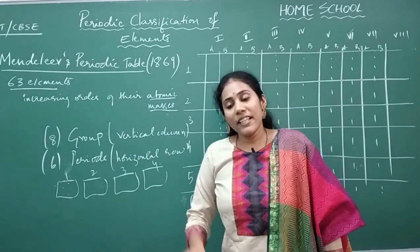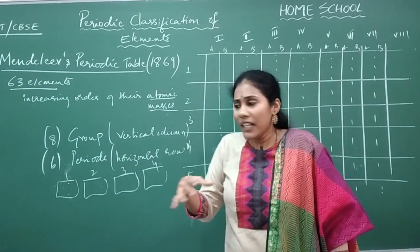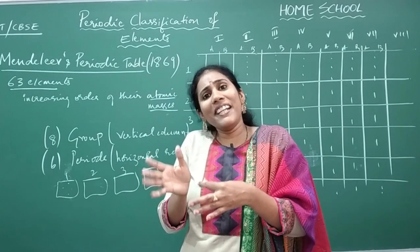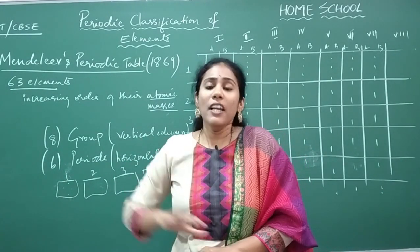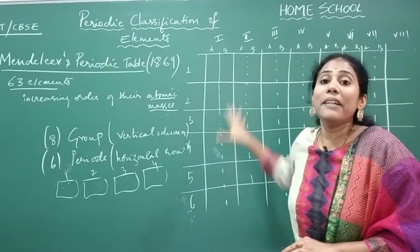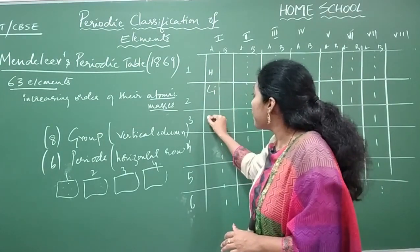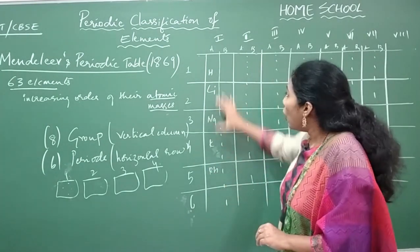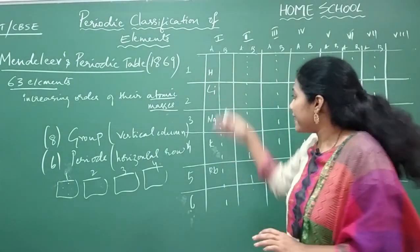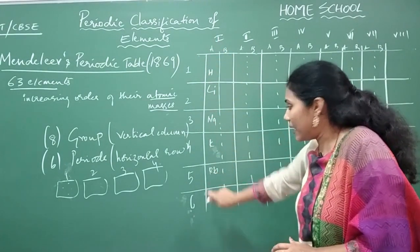What he could observe is that 3 to 4 elements were having the same properties — at least 3 to 4 elements reacted in a similar way with hydrogen and oxygen. Those elements he placed in one particular group. For example, hydrogen, lithium, sodium, potassium, and rubidium all showed similar properties and were arranged in group number 1A.